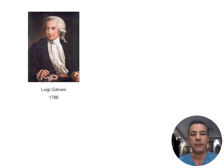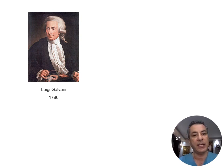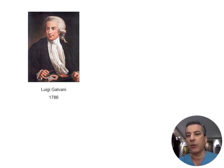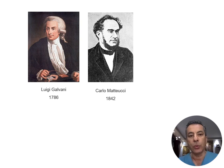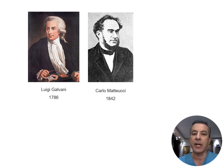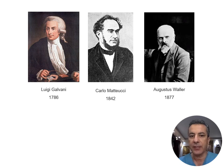How did it all begin? In 1786, Luigi Galvani, an Italian physician and physicist at the University of Bologna, discovered the association between muscle contraction and electrical activity, demonstrating that electrical stimulation could induce muscle contraction. In 1842, Carlo Matteucci, an Italian physicist at the University of Pisa, recorded the first electrocardiogram from a frog's heart using the frog galvanoscope invented by Galvani.